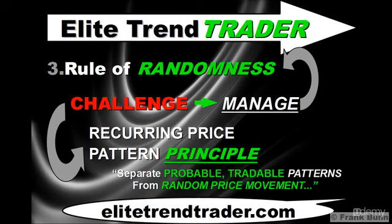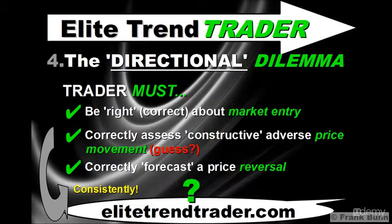Traders are able to capitalize on the massive winning trades the market will randomly throw their way. This brings us to the directional dilemma. In order for traders to profit from moving price, they must be right or correct about the market entry — how, where, and when they enter the market. The trader must also correctly assess adverse price action as constructive or not, whereas prices will encounter numerous bouts of selling as they move higher throughout expansion cycles. Finally, the trader must correctly forecast a price reversal — or the end of the trend — or at least the point at which contraction is imminently more likely than continued expansion. And the trader must do all of this consistently. That's a tall order — no wonder so few win in this game and so many lose.